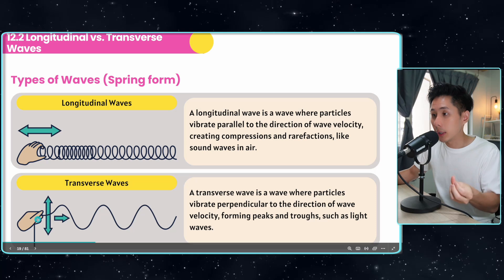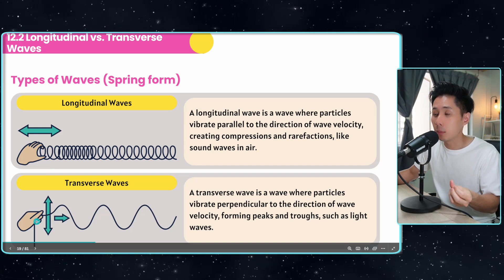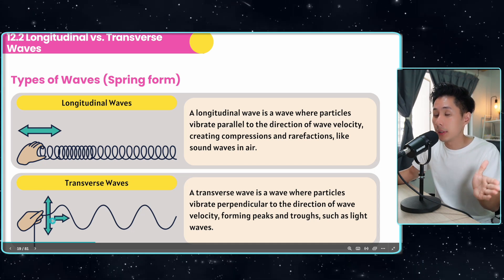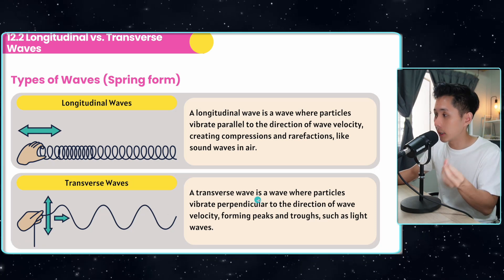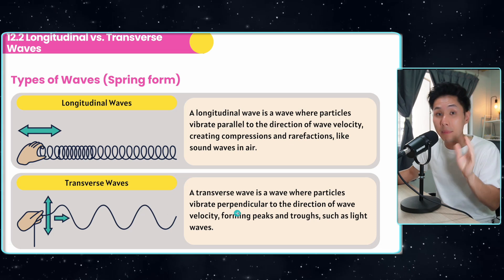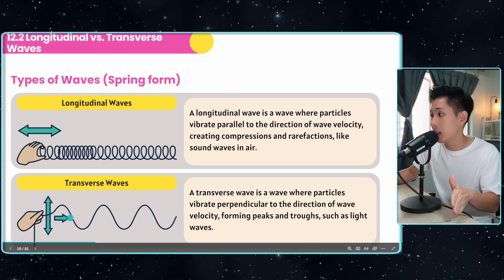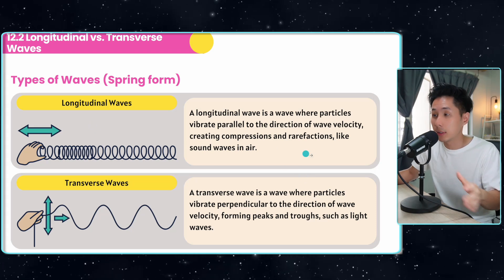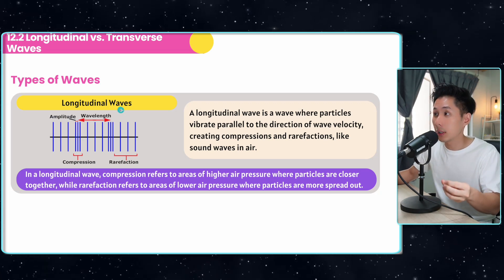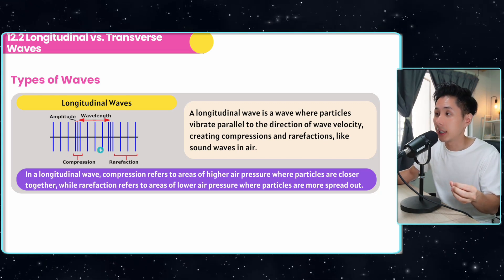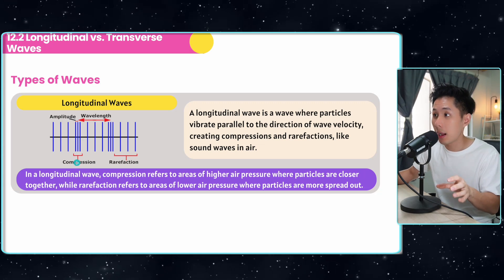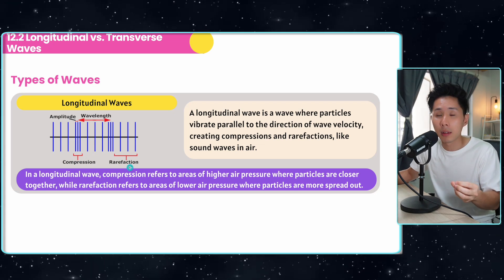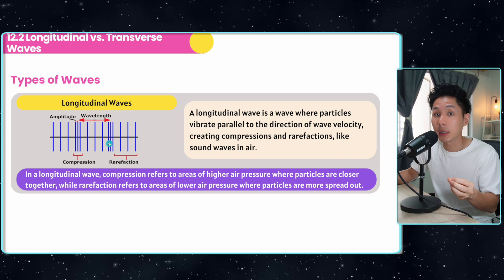Transverse is the opposite. In a transverse wave, the hand moves up and down, but the wave transfers energy from left to right. That's why a transverse wave is defined as one where particles vibrate perpendicular — at 90 degrees — to the direction of wave velocity. Looking more closely at how a longitudinal wave like a sound wave works: it has two parts — the compression part where particles are close together, and the rarefaction part where particles are further apart. A sound wave is an example of a longitudinal wave.